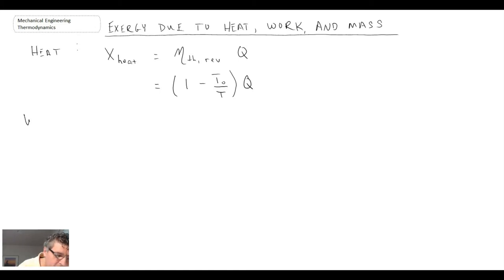Now for work. For work, we have two different types of exergy depending upon whether or not we have boundary work, because if we have boundary work, we've got to be more careful because we could have work being performed on the surroundings.